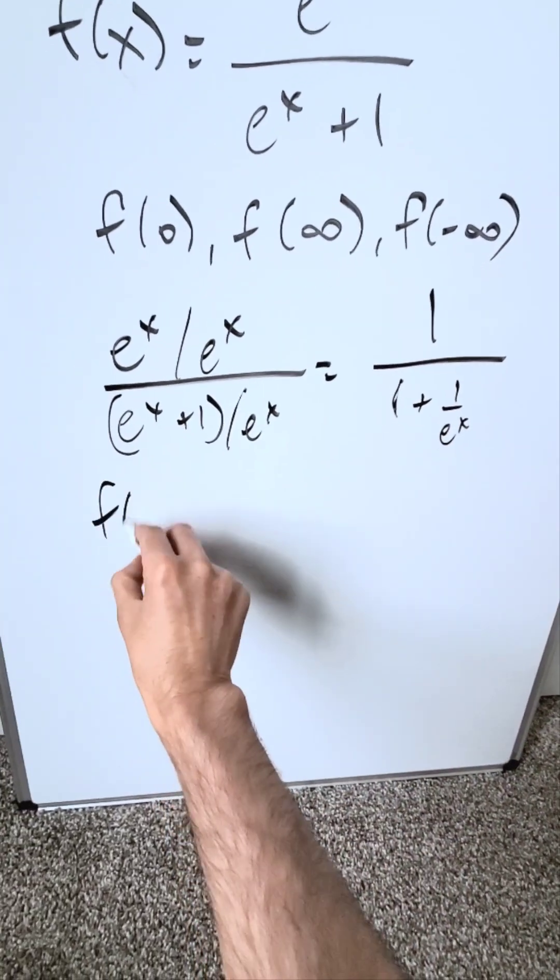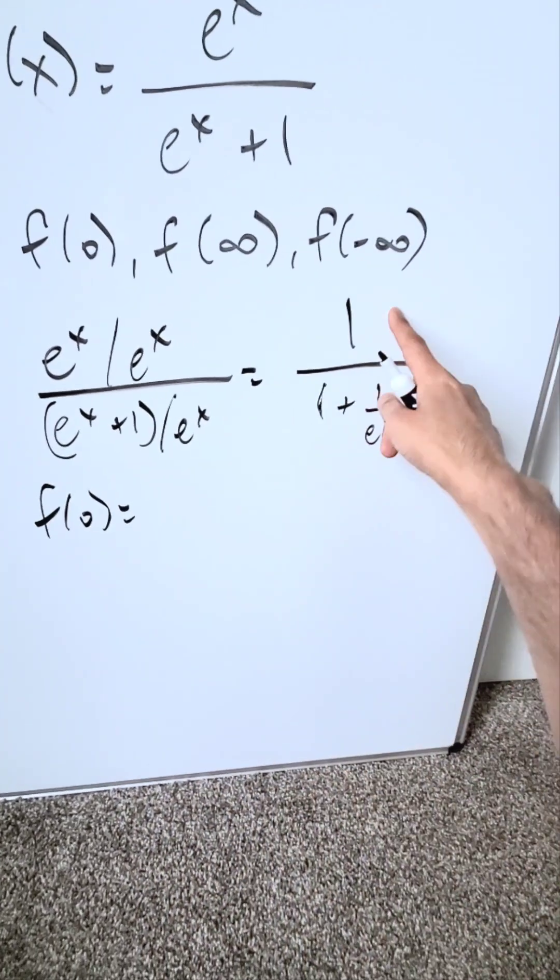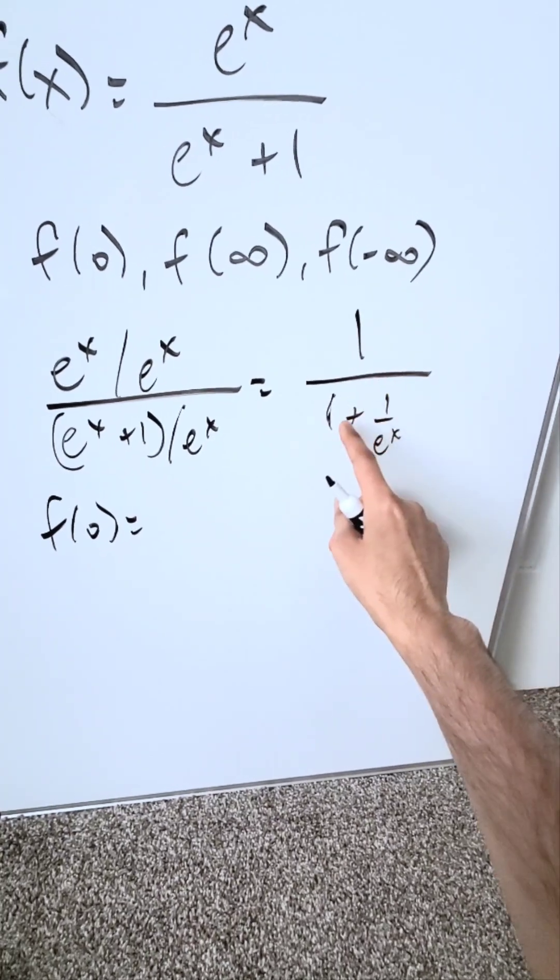Now you evaluate your items. f of 0. If I put 0 in places of x, I'll have 1 over 1 plus 1, which is 1 over 2.